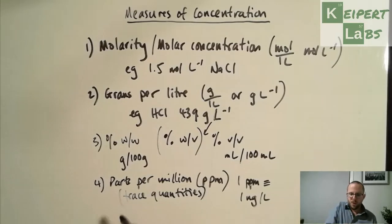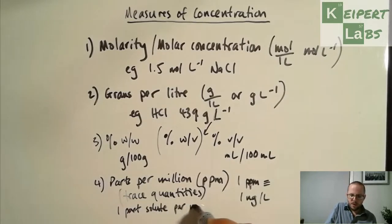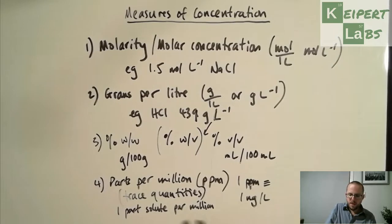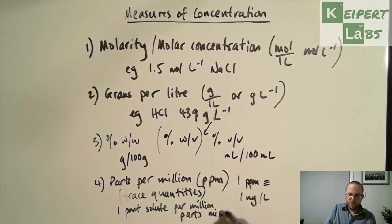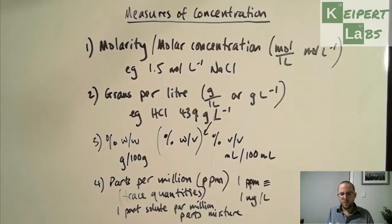But the beauty of this is that it's per million parts of whatever mixture it is. So one part of solute, whatever that might be, per million parts of mixture. Now, the reason that I say that is that we also talk about things in parts per million when it's in air as well. So talking about pollutants in the atmosphere, for example. Air is not water.